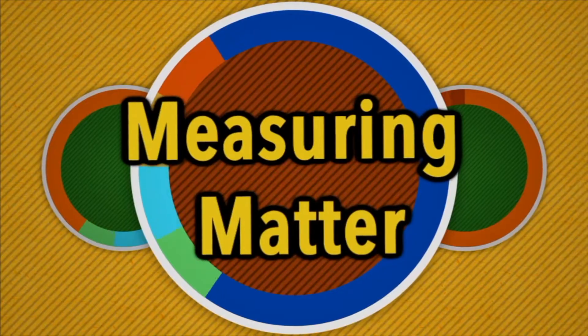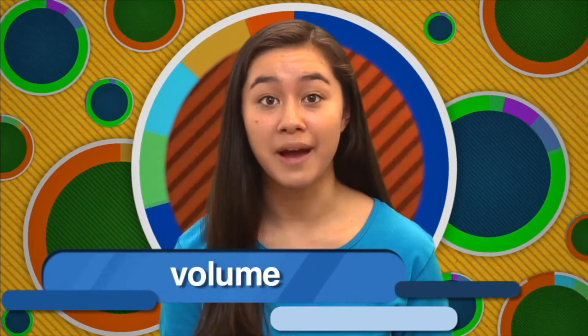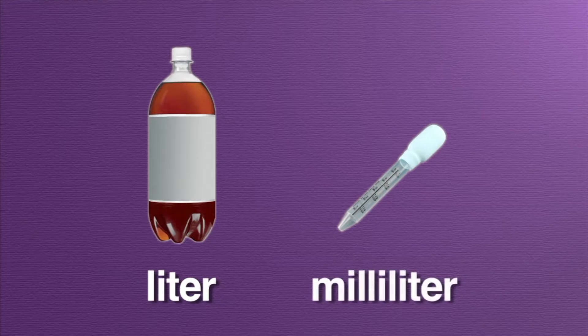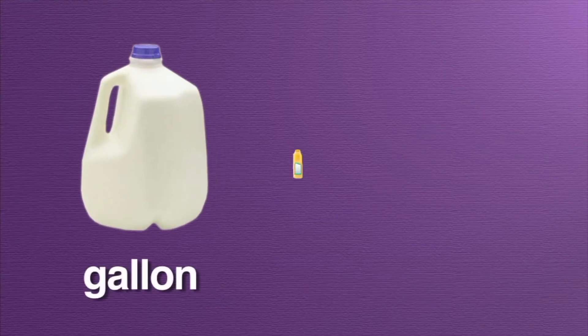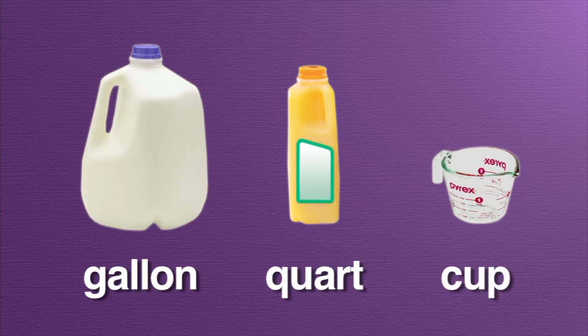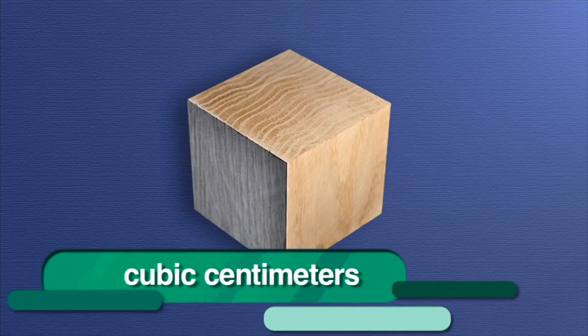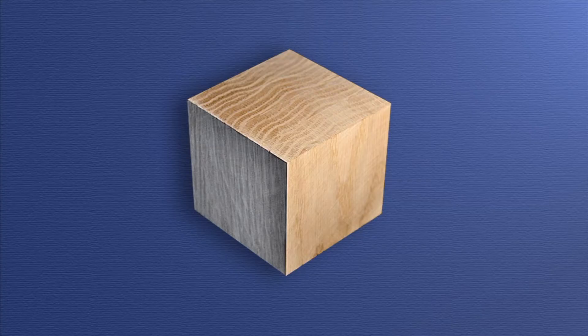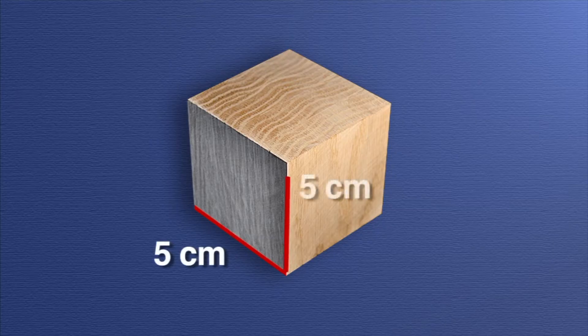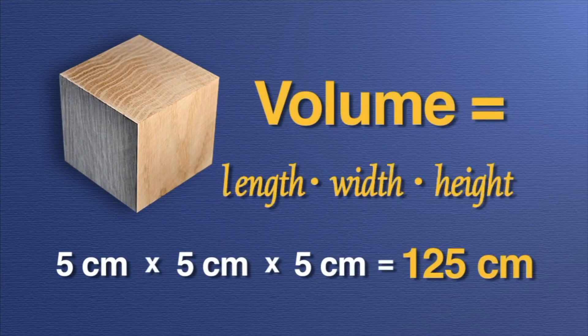Measuring matter. The amount of space that matter takes up is called its volume. It's important to measure how much space matter occupies. Liquids are measured in units such as liters, milliliters, gallons, quarts, and cups. Solids are usually measured in cubic centimeters. To find the volume of a solid object like this block of wood, all you have to do is multiply the measurement of length — 5 centimeters — by height, 5 centimeters, by width, 5 centimeters, for a total of 125 cubic centimeters.